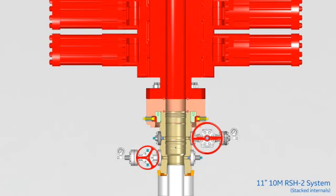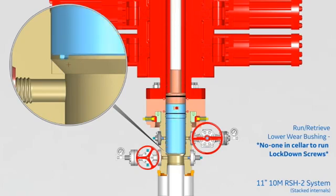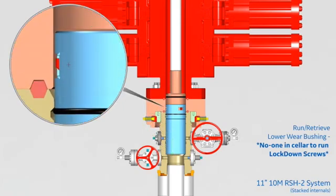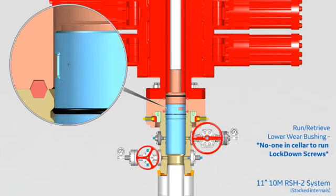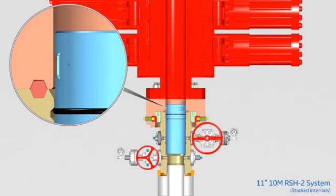After successfully testing the connection, a wear bushing is run into the RSH housing to protect the inner sealing surfaces of the housing while drilling inside the surface casing string in preparation for the intermediate casing string. The wear bushing is run with the same combination tool previously used as a test plug, but in the inverted orientation. After drilling is complete, the combination tool is removed by rotating counter-clockwise, and the tool's spring-loaded pins retract from the wear bushing's windows to permit removal of the tool from the well.